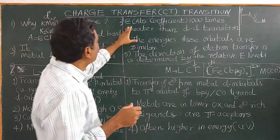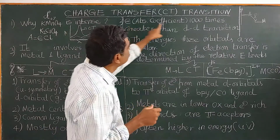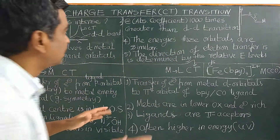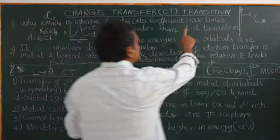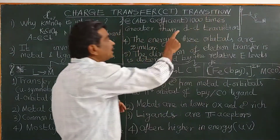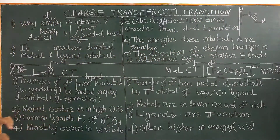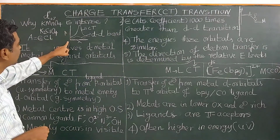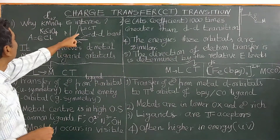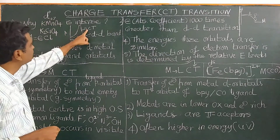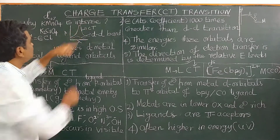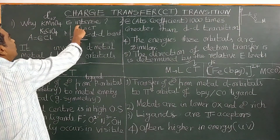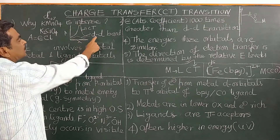The molar absorption coefficient, if you look at the molar absorption coefficient, is a thousand times greater than the d-d transition. As you can see, the absorption spectra shown here for potassium permanganate — the intensity is very very high.